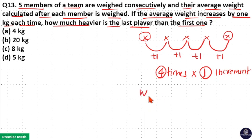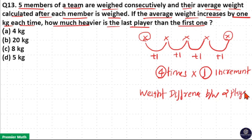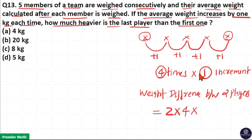The weight difference between 2 players is equal to: there are 2 players involved — last and first player. So, 2 into 4 times average increases. And 4 times average increases by 1 kilogram, so 4 into 1. Therefore, 2 into 4 into 1 is equal to 8 kilograms. So, option C is your answer.